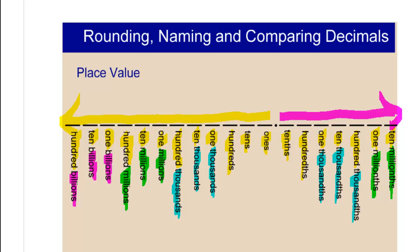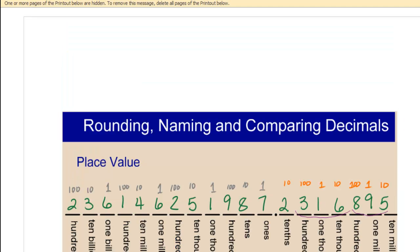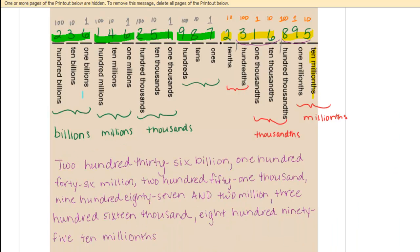So let's do a little practice with our place value. Here is a number, and I would like for you to figure out how you would actually say this number or write this number out. Give it a shot. It's 236,146,251,987 and 2,316,895 ten millionths.